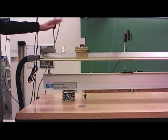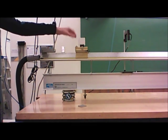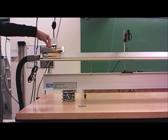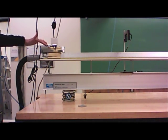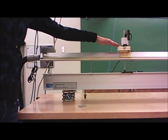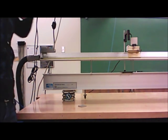What we do in this experiment is we're going to actually tilt the track, and we'll start the glider from rest at this end of the track, release it, and it'll slide just due to gravity down the track, and it'll pass through this photogate at the end of its motion.